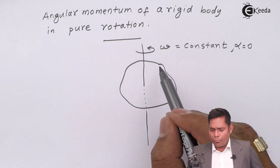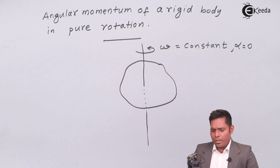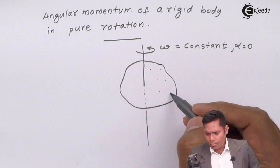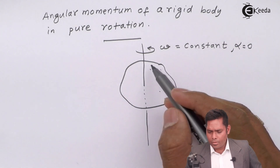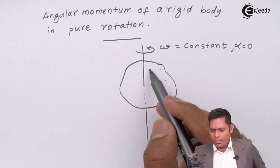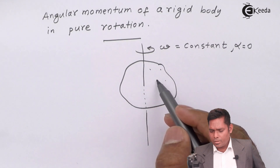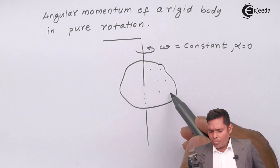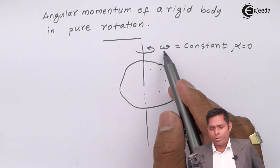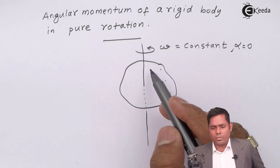When the object is rotating, each point on the object will also have the same value of omega. Every particle on a rigid body will have the same omega, but will have a different linear velocity.